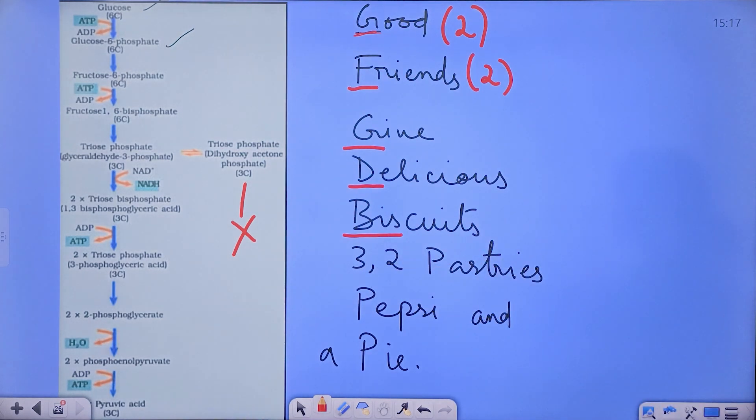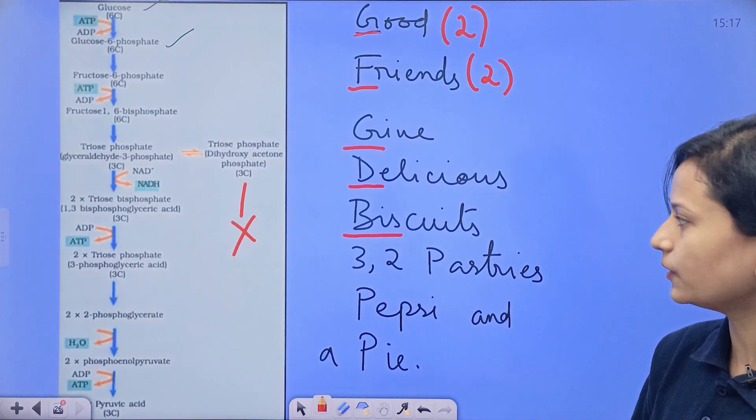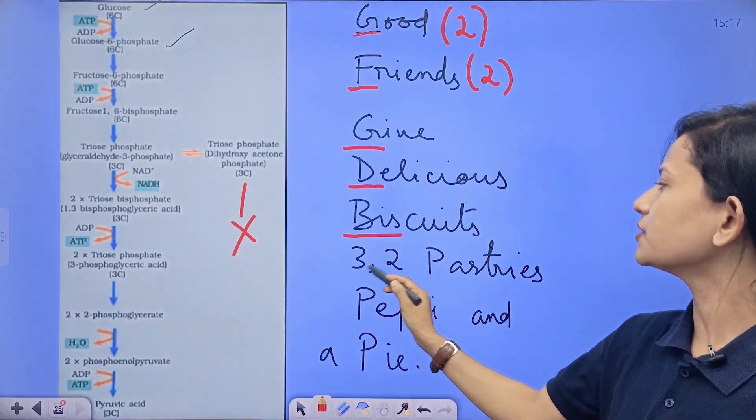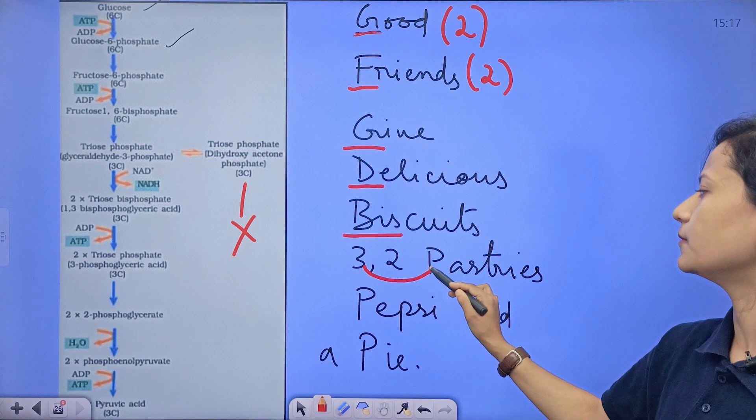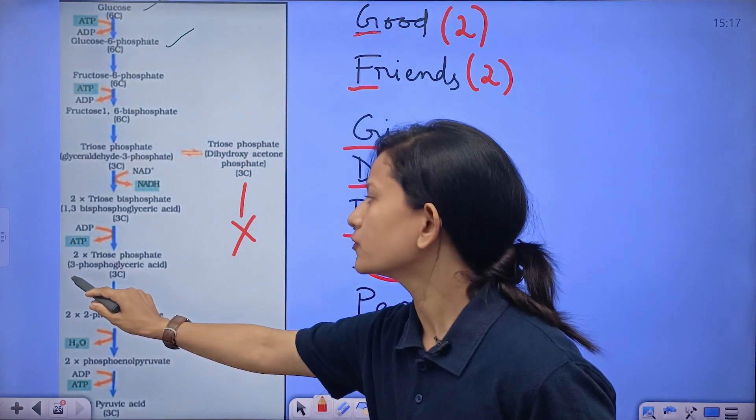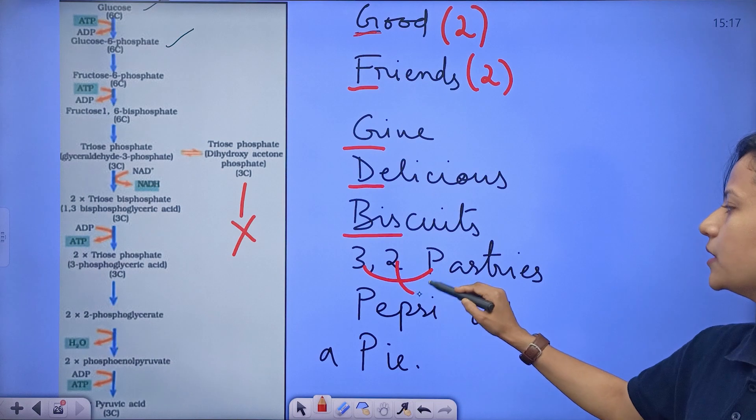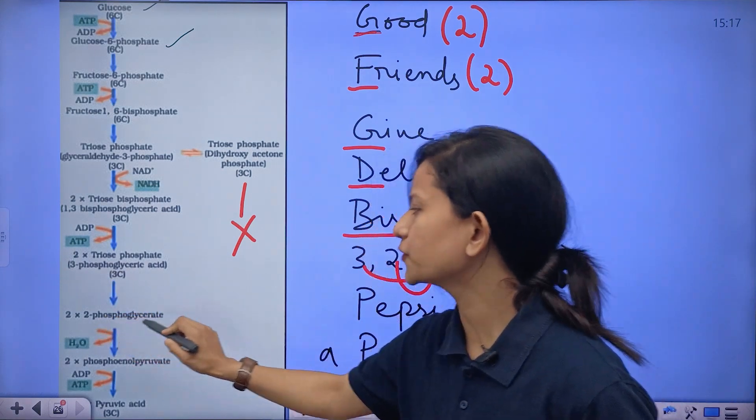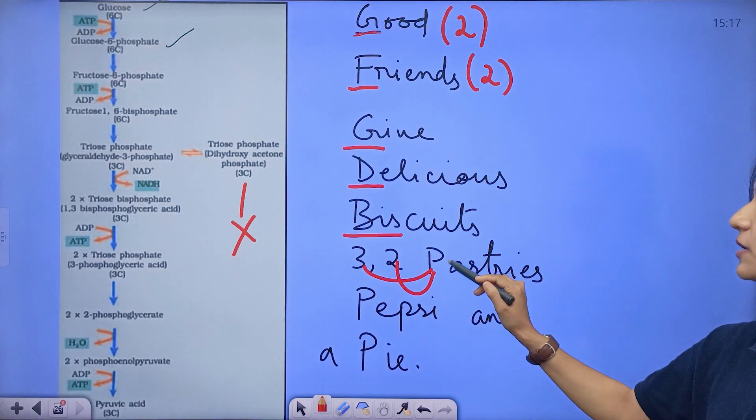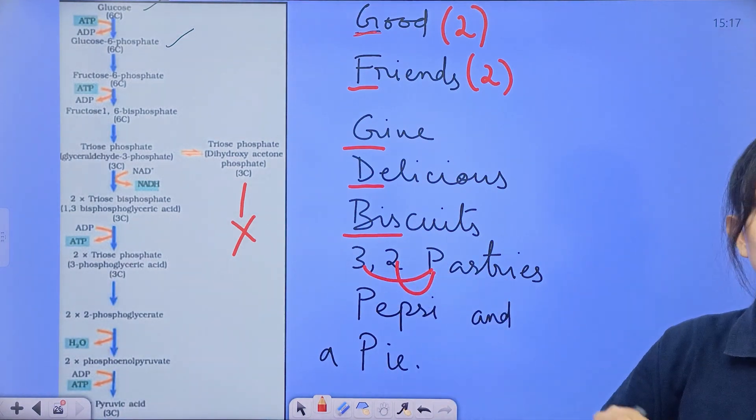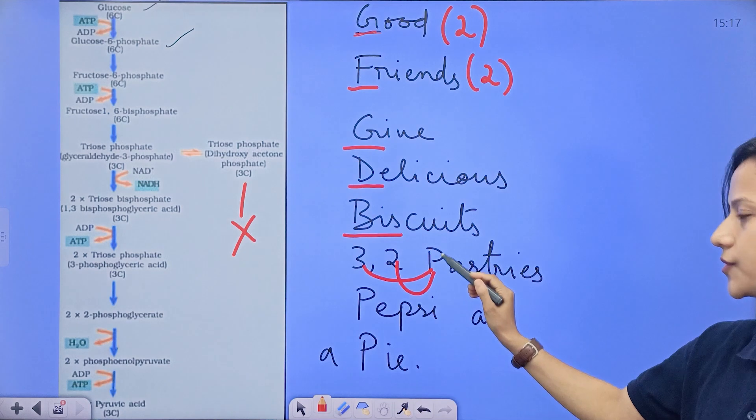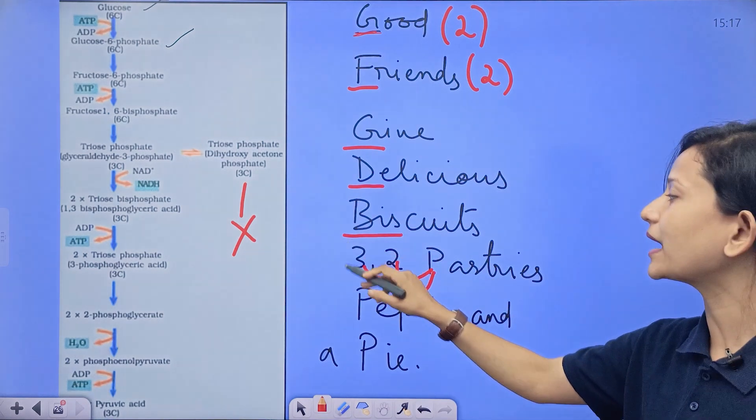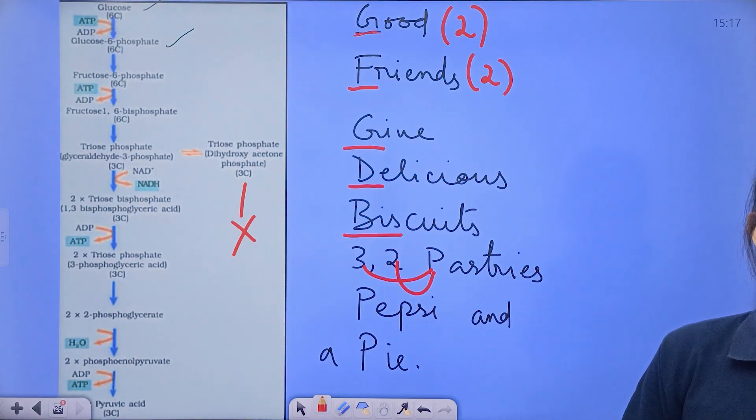Then 3,2, 3,2 pastries. First you have to see 3P: 3P means 3-phosphoglyceric acid. Then you will go to 2P: 3-phosphoglyceric acid breaks down into 2-phosphoglyceric acid. So 3P means 3 pastries, then 2-phosphoglyceric acid is 2 pastries together. So I combined them: 3,2 pastries.